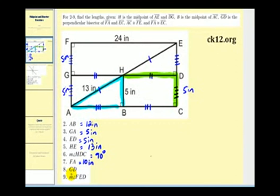Now we want to determine the length of segment GD. Well segment GD would be congruent to segment FE, so GD would have to be 24 inches.